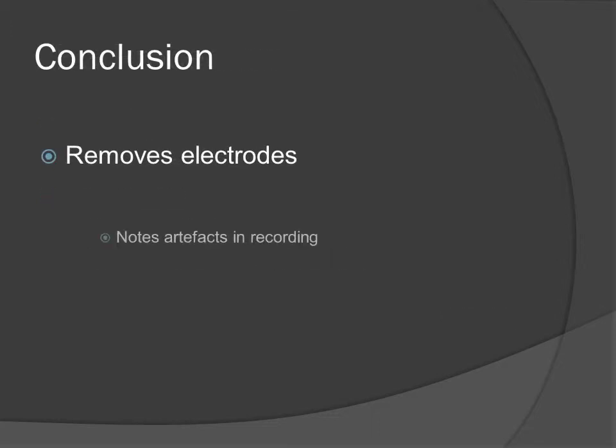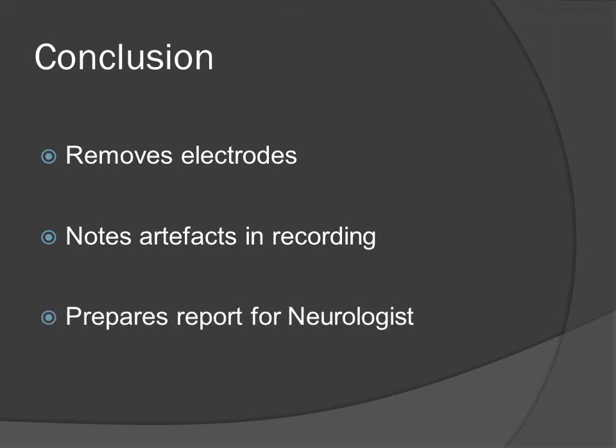At the conclusion of the test, the neurophysiologist will analyse the recordings and note any artefacts in the data. Artefacts are erroneous electrical signals detected by the EEG that did not come from neural activity — a bit like an interference in the signal. These can come from things like muscle movements of the patient or opening and closing of the eyes. To conclude the test, the neurophysiologist will prepare an EEG report for the neurologist to discuss with the patient.